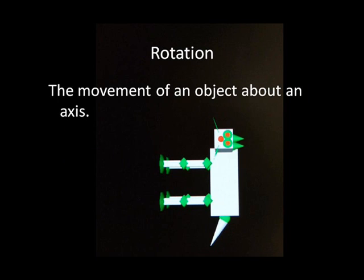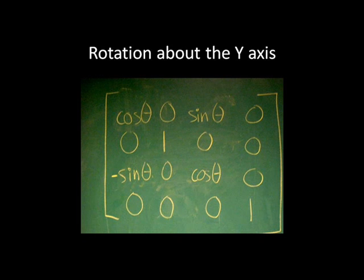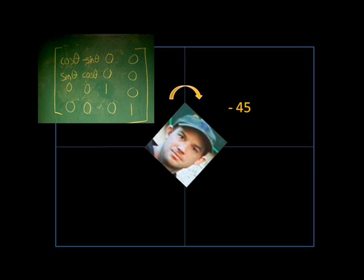Using this matrix where delta y is equal to 4 and delta x is equal to 5, we can show how to translate our object up 4 in the y direction and over 5 in the x direction. Next we have rotation. Rotations are the movement of an object around an axis. In 3D we have three rotation matrices, one for each axis. Here is the matrix for rotation around the x axis, here is the matrix for rotation around the y axis, and finally here is the matrix for rotation around the z axis. Using the z axis rotation matrix where theta is equal to negative 45 degrees, we get rotation around the z axis.